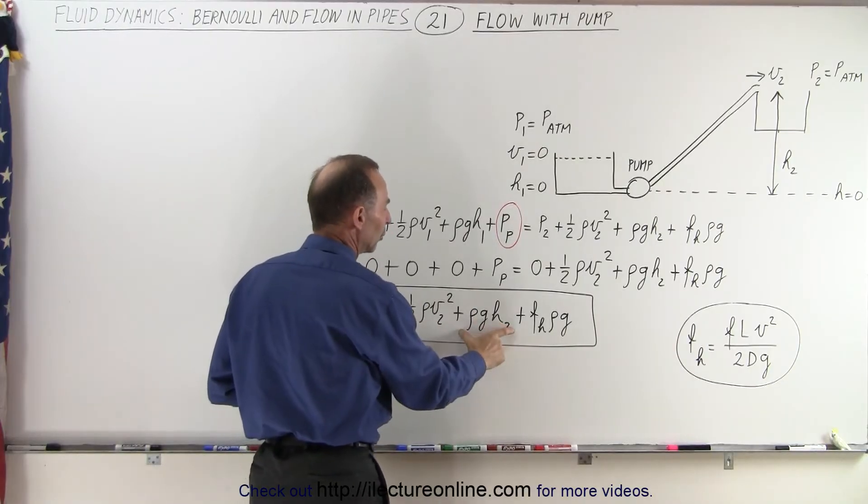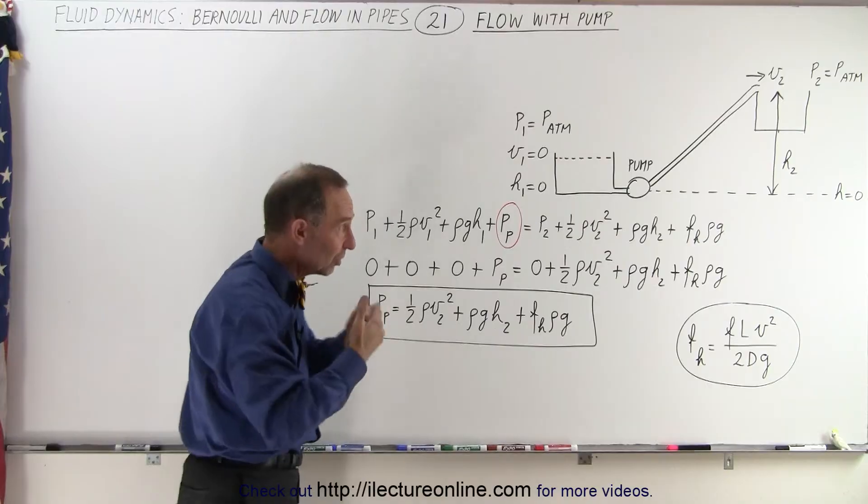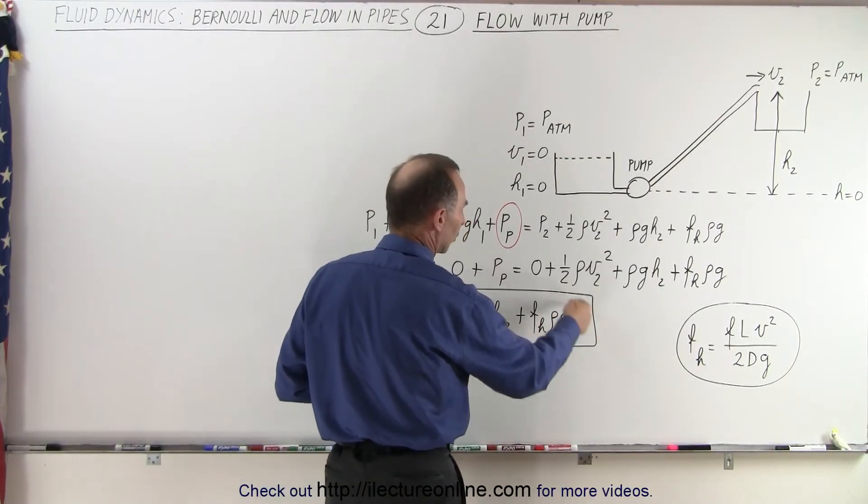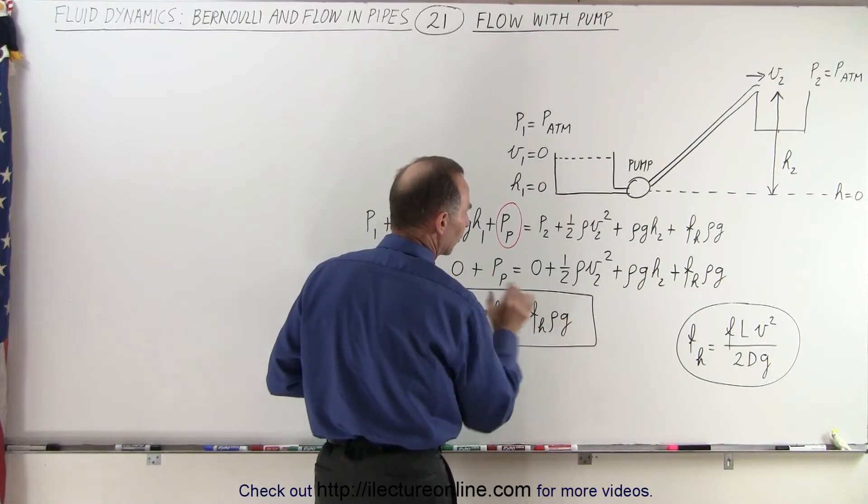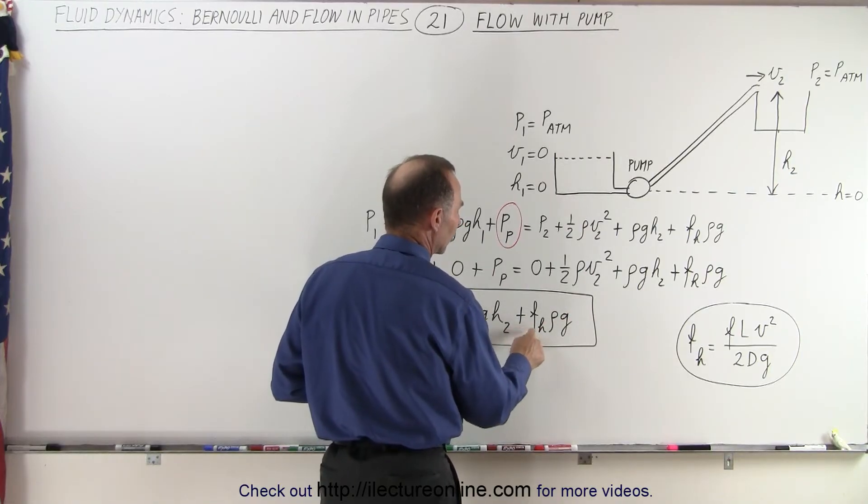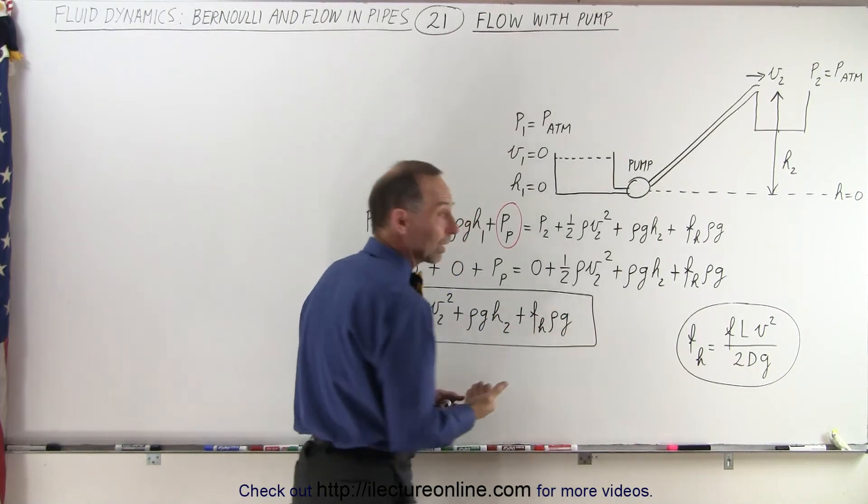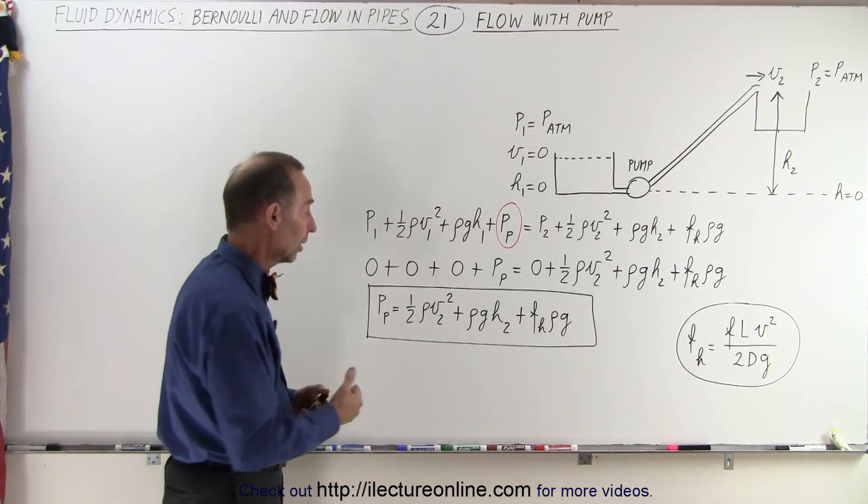Plus rho g h2, which is the potential energy that's given to the water, and finally the energy required, the work required to overcome the frictional force, the friction head loss times the density times g. That's an additional amount of work that needs to be done to overcome the friction as well.